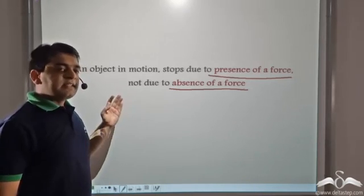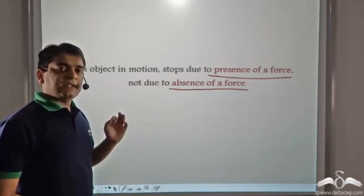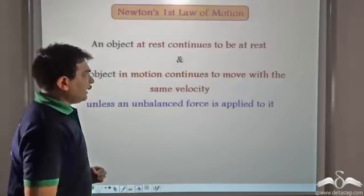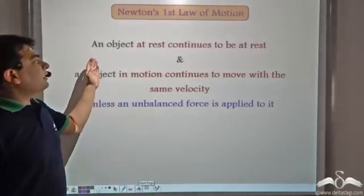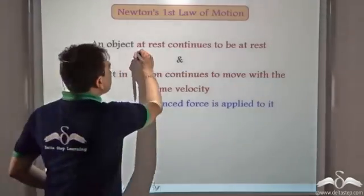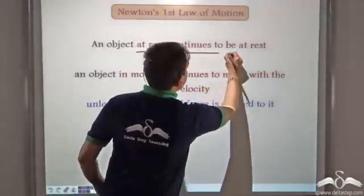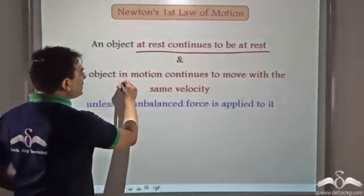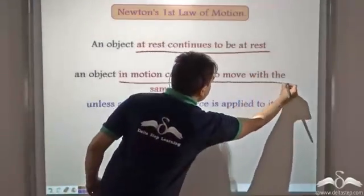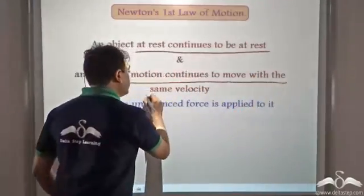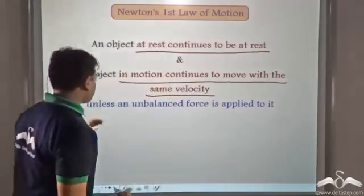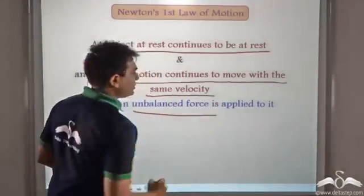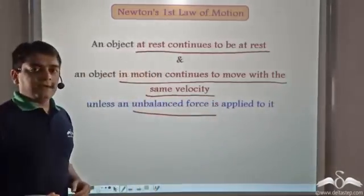Newton summarized these observations in his first law, wherein he stated that an object at rest continues to be at rest and an object in motion continues to move with the same velocity unless an unbalanced force is applied to it.